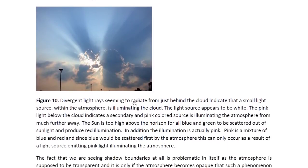Here we also have divergent light rays — or at least what seem like light rays, which are actually shadow effects. These light rays seem to radiate from just behind the cloud, indicating that a small light source within the atmosphere is illuminating the cloud. The light source appears to be white. The pink light below the cloud indicates a secondary, pink-colored source that is illuminating the atmosphere from much further away.